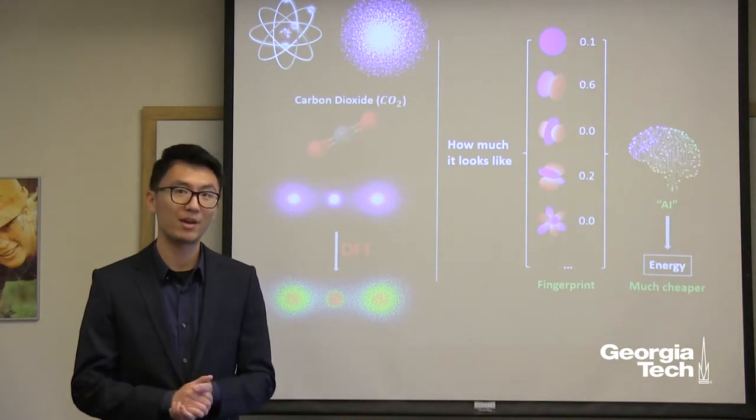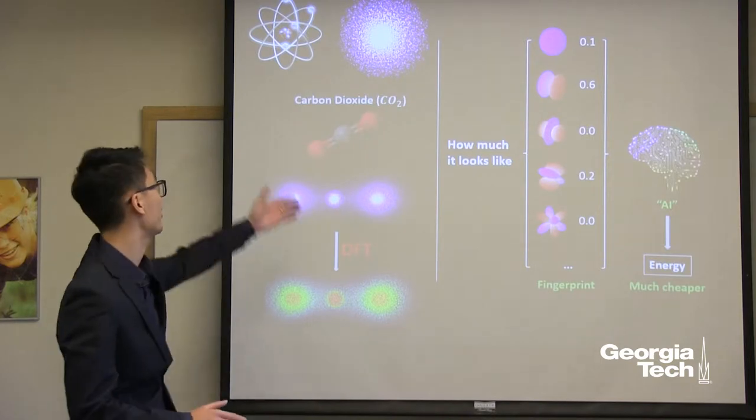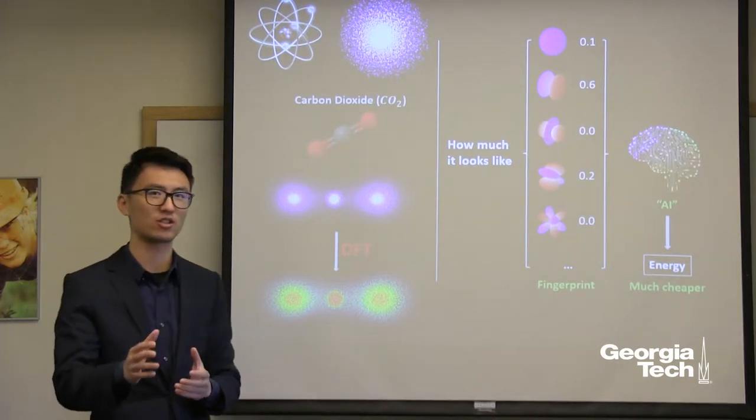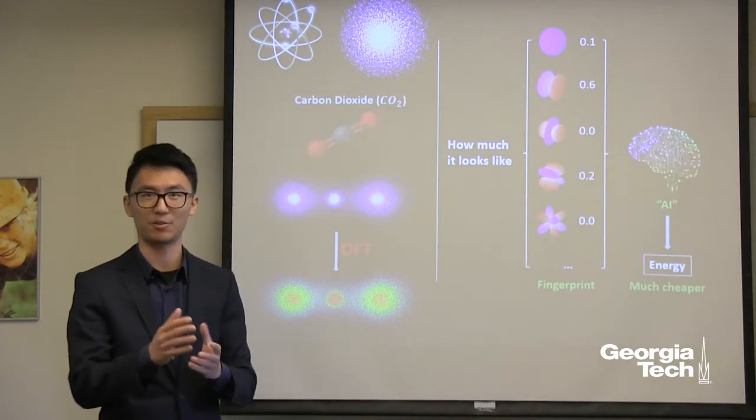We know that everything is made of atoms. And when we think about atoms, we tend to have this picture in mind: a bunch of electrons orbiting around the nucleus, like planets orbiting around the sun. But that's not the case.